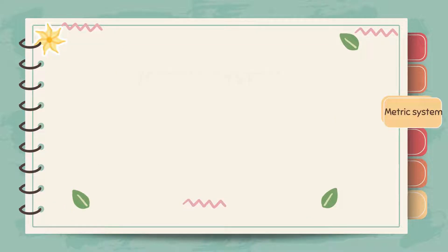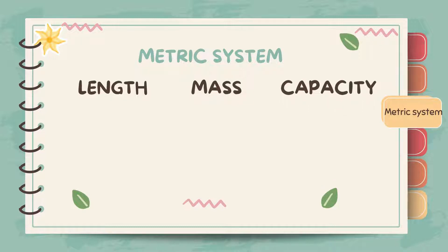The three metric system bases are for length, mass, and capacity. For length, we have meter; for mass, gram; and for capacity, liter.